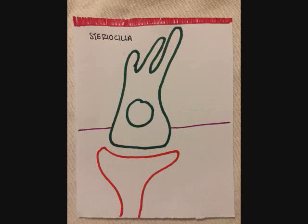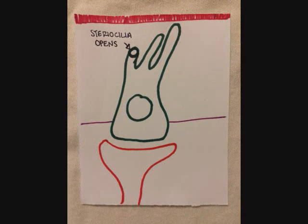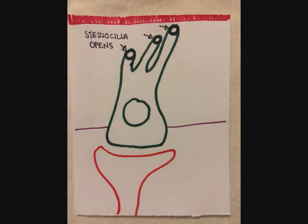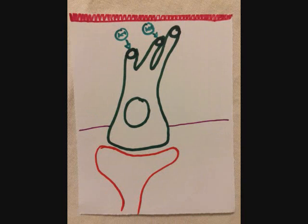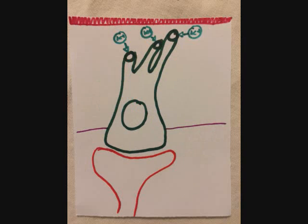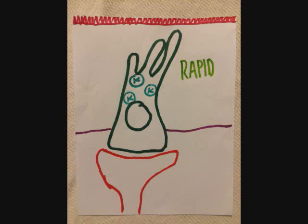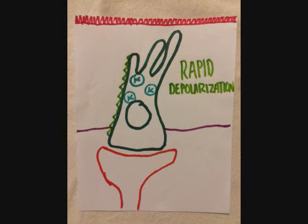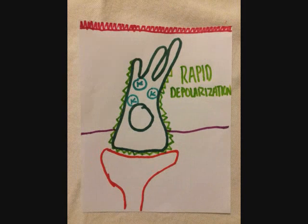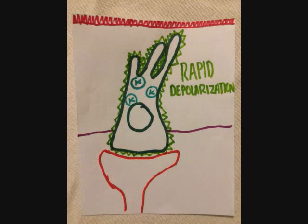Step 1: When the basilar membrane vibrates due to the pressure movement from perilymph, the stereocilia open. After the stereocilia open, potassium ions begin to enter the hair cell. Potassium ions are positively electrically charged ions. Step 2: The potassium ions then cause a rapid depolarization of the entire hair cell. Depolarization is a change of permeability.